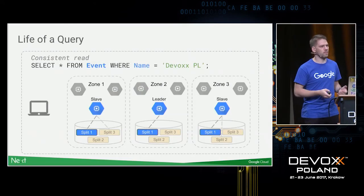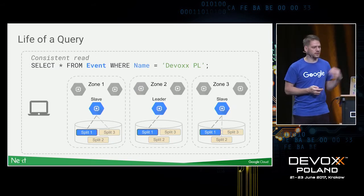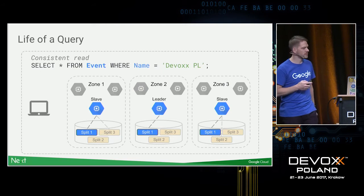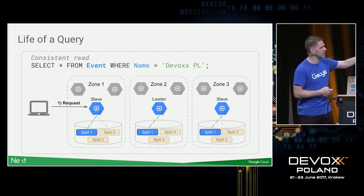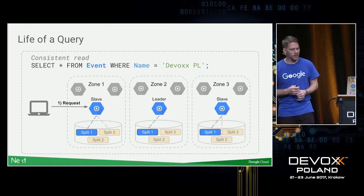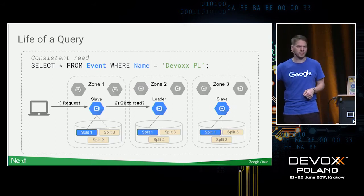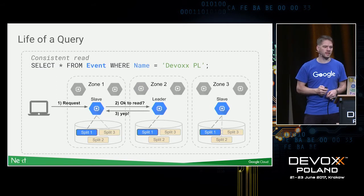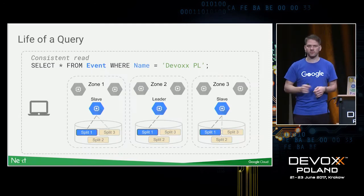Let's go through some practical examples. First, a consistent read — selecting all events where the name is devox.pl. The client sends a request, let's say it goes to a follower in the Paxos group. The follower asks the leader of that data piece: 'Do I have the latest data?' If the leader responds with the timestamp of the latest data, the follower responds with the data. The only communication is checking whether the follower has the latest.